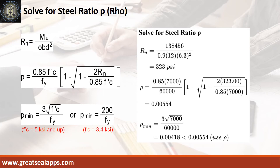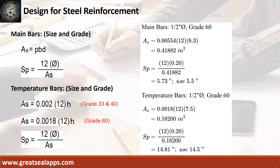The beam design ratio RN equals 323 PSI and reinforcement ratio rho equals 0.00554. Given rho equals 0.00554, B equals 12 inches, and D equals 6.3 inches, the area of steel for main bars is 0.41882 square inch, and the spacing for 1/2 inch diameter bar is 5.5 inches.